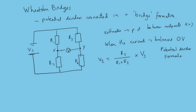And similarly, the potential at Y is the potential across R4. So V4 is going to be R4 over R3 plus R4 times Vs.